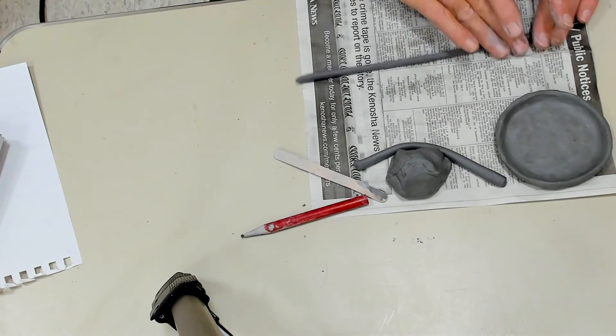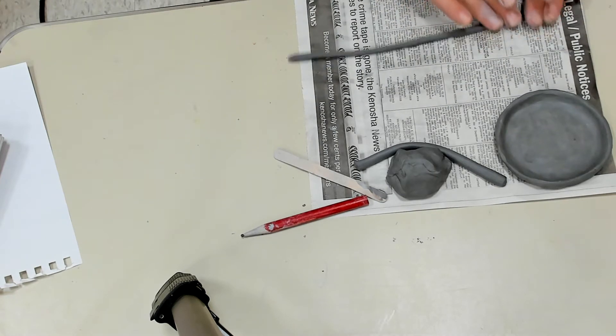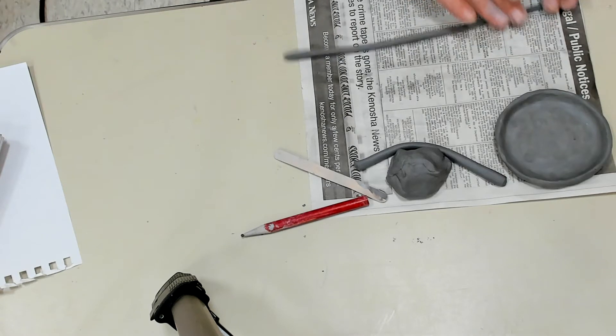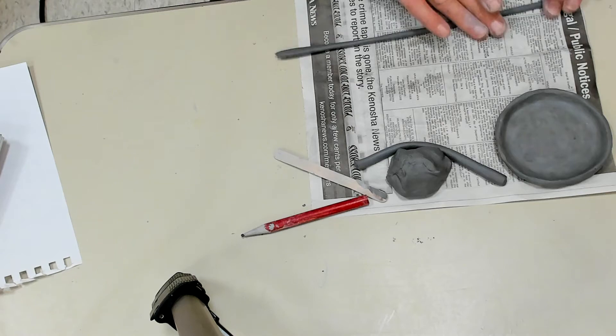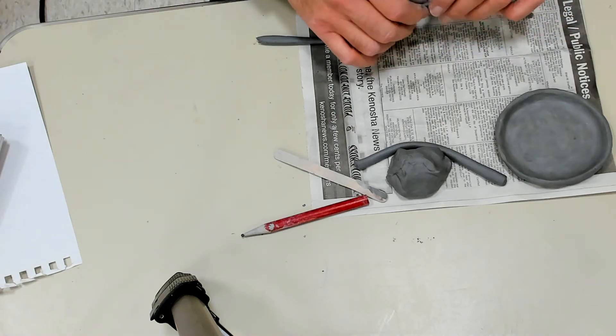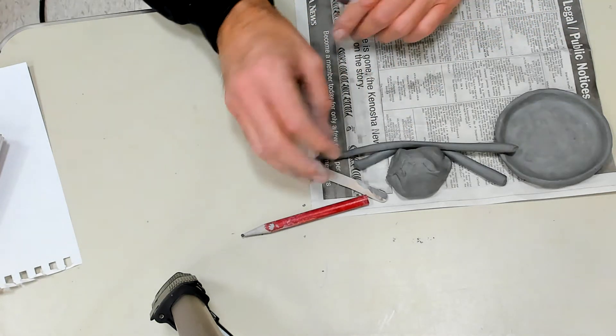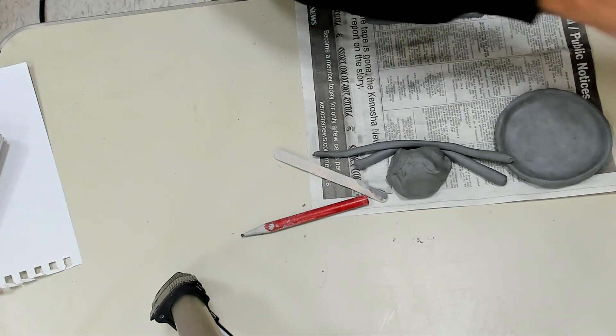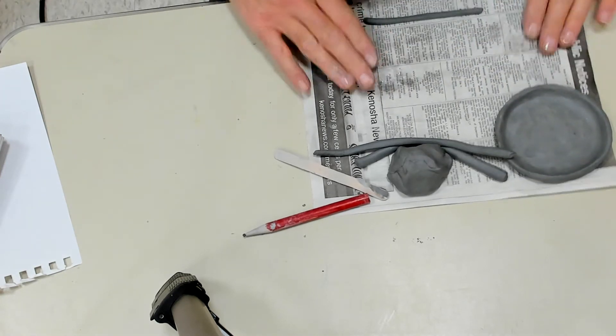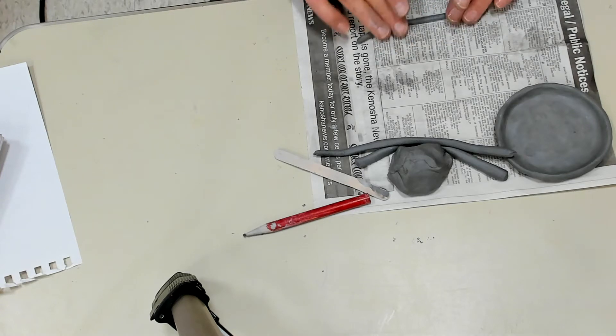It has to be skinnier than real spaghetti. Although I don't know, that's going to be pretty small. But if I want it to look realistic, it really should be pretty thin. I'm going to break that in half. I'm going to have to roll out quite a bit of spaghetti to make it look right. I'm going to get my fingers just moist. My clay is starting to crack a little bit.